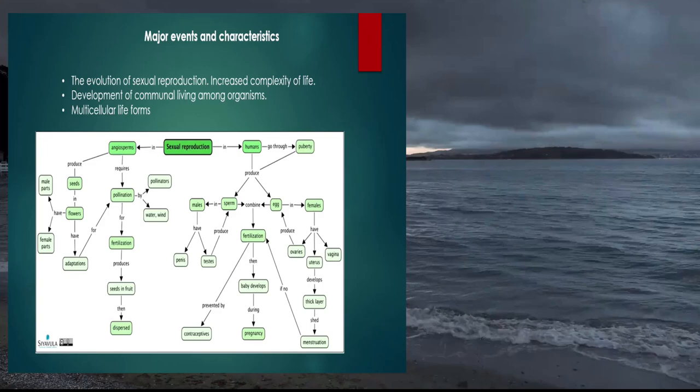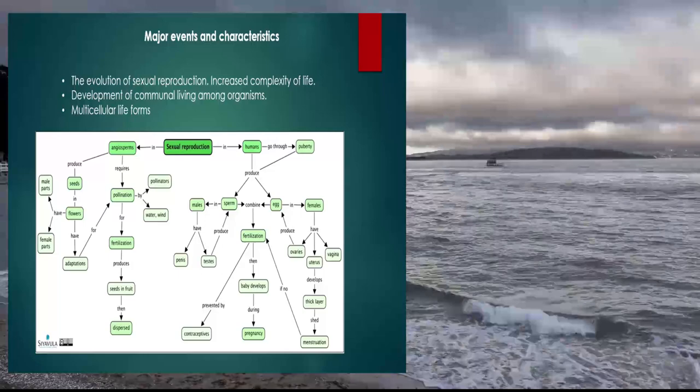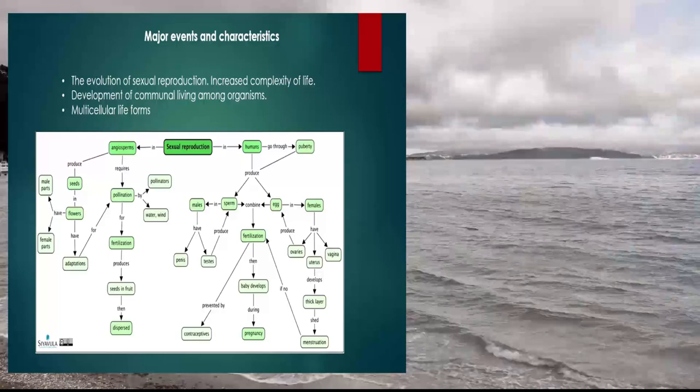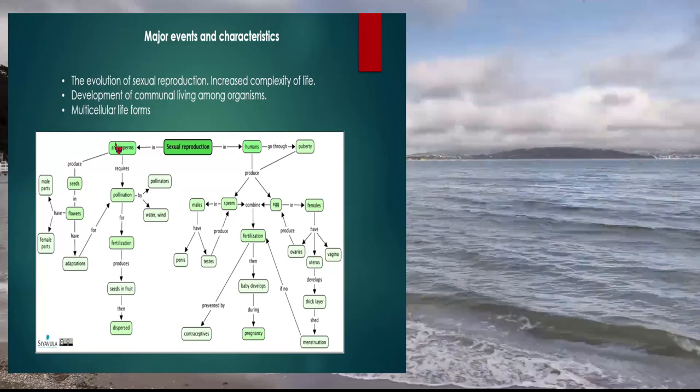Major events and characteristics of the Mesoproterozoic Era: the evolution of sexual reproduction starts and increased complexity of life begins. Development of communal living among organisms starts and multicellular life forms start to emerge in this era. You can see the sexual reproductive systems and how it affects humans and plants, and there is this nice flow chart that explains the process.